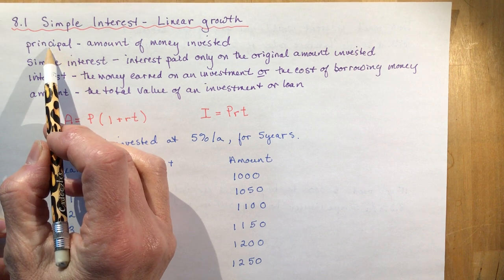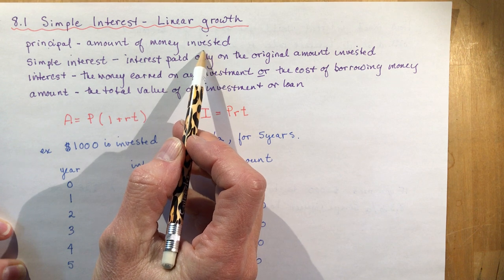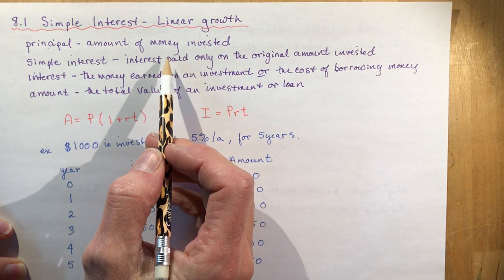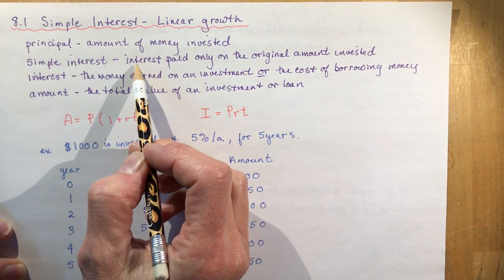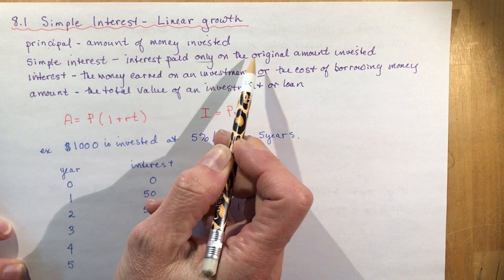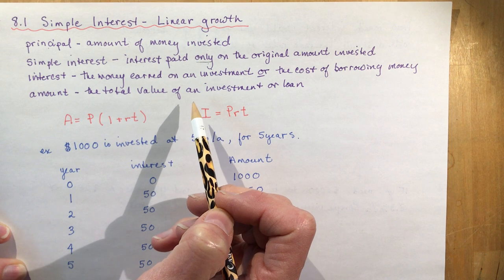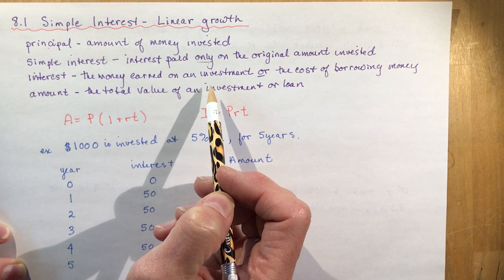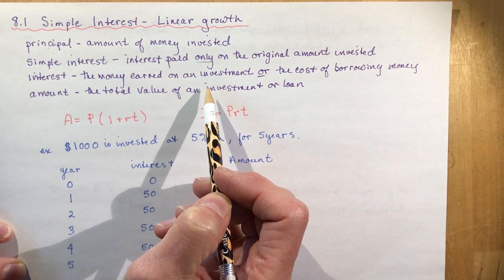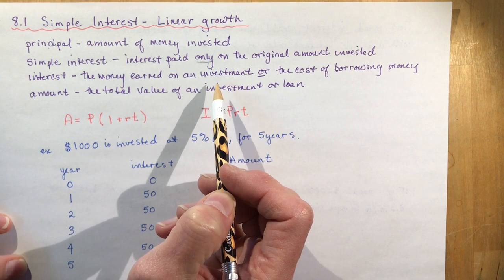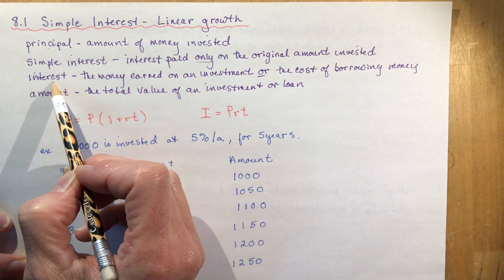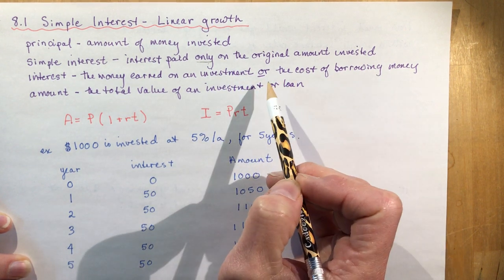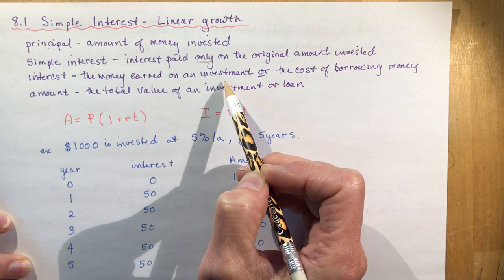The principal is the amount of money that you have invested. Let's say you've got a check for your birthday and it's $500. That's the principal amount. You put it in the bank, it earns interest. Simple interest is just interest that is paid only on the original amount invested. It's not the interest you want if you're putting money into the bank, but it would be great if you were on the borrowing side. Interest is the money that you earn on an investment or the cost of borrowing money.